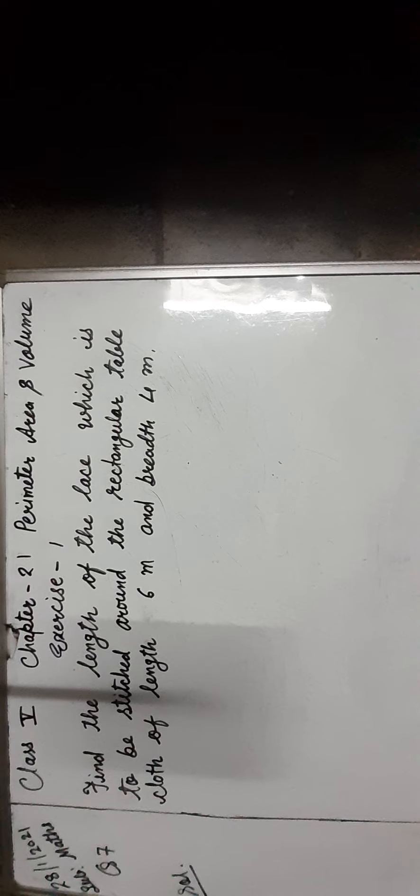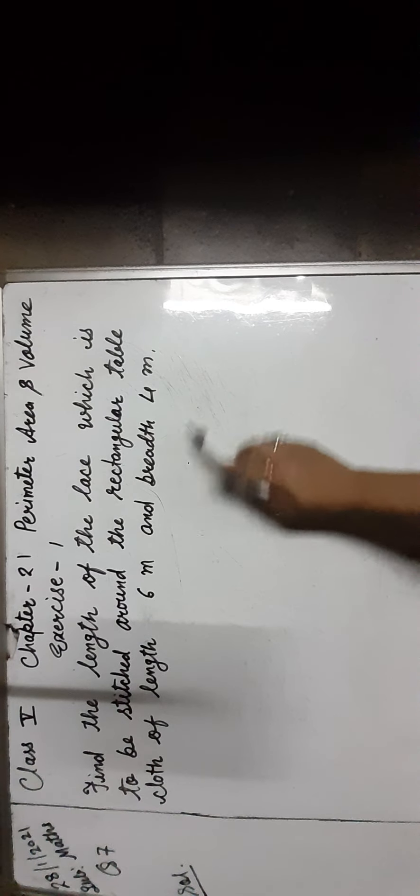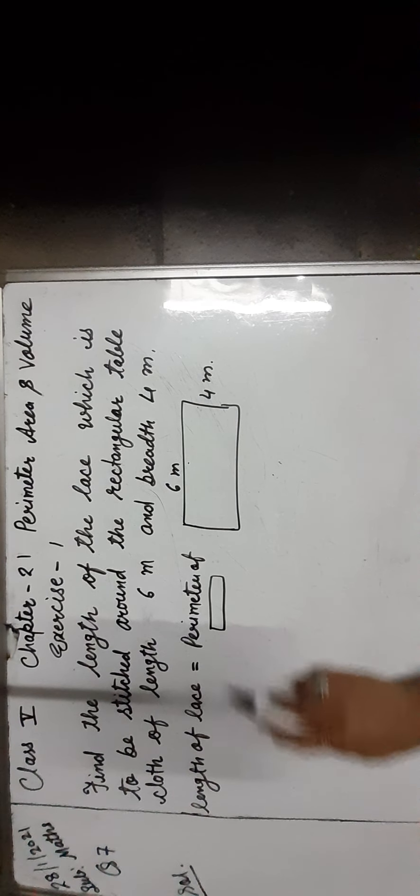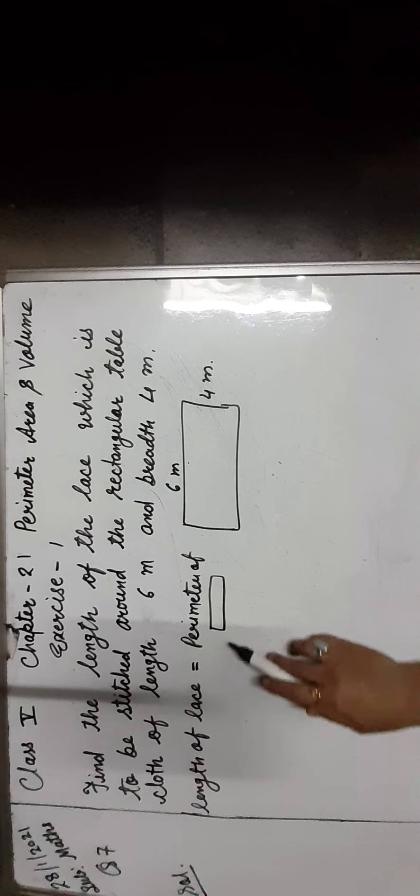Let us do question number 7. Find the length of lace which is to be stitched around the rectangular table cloth of length 6 meters and breadth 4 meters. Here the table is in rectangular shape. The length of lace is equal to the perimeter of a rectangle, so first we find out the perimeter of the rectangular table.